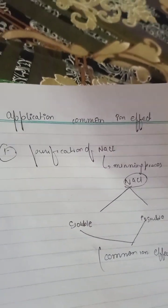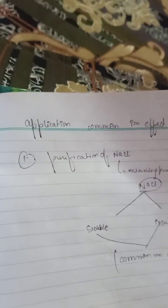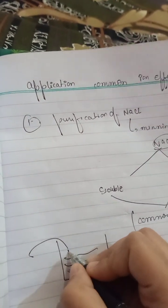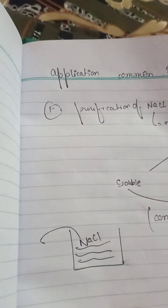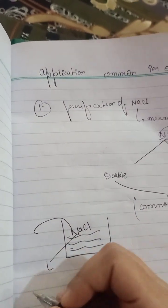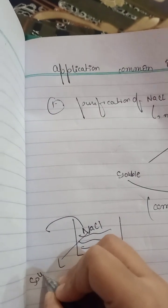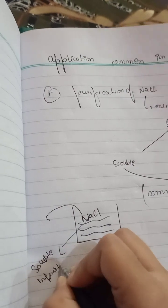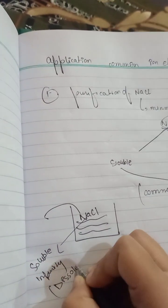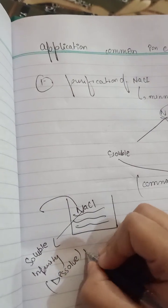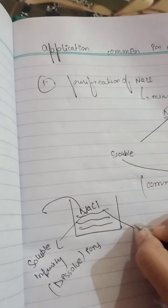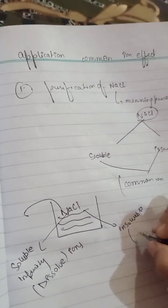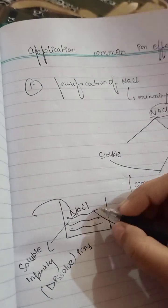So what we will do? We will make a solution of NaCl, which is brine — for example, this is water and we have included NaCl in it. NaCl has solubility, so the soluble impurity will dissolve and be converted into ions. The insoluble impurity will not dissolve; it will remain as a crystal and settle down.